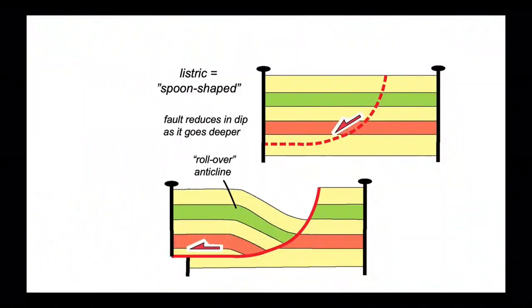The term listric implies that the fault is spoon-shaped, in other words that it is concave upwards. The fault reduces in dip the deeper it goes. If we keep the footwall fixed, a consequence of the displacement on this shaped fault is the hanging wall deforms and creates a structure termed a rollover anticline, so called because the beds roll down and over onto the fault plane.